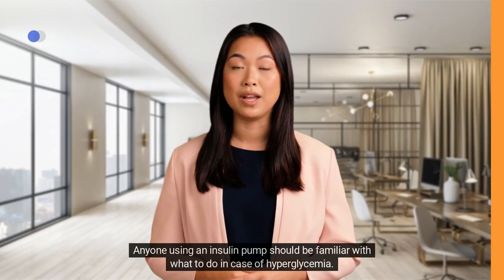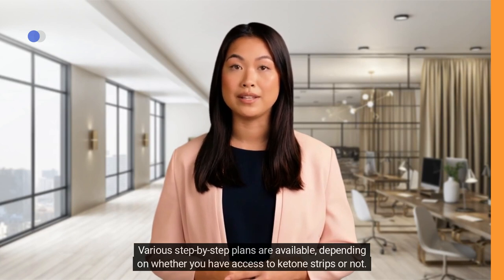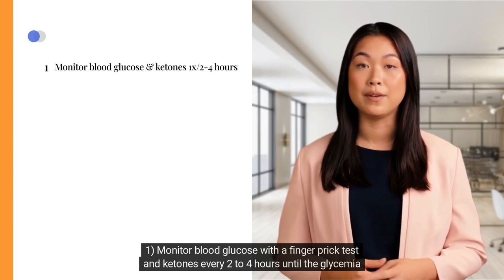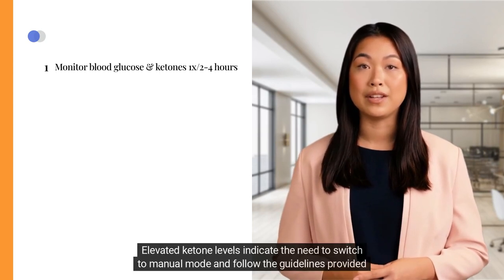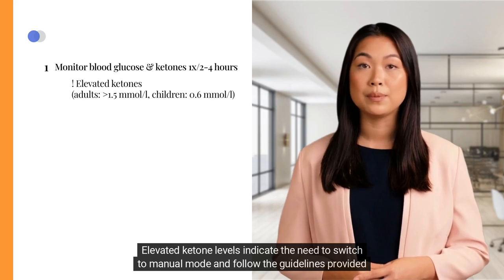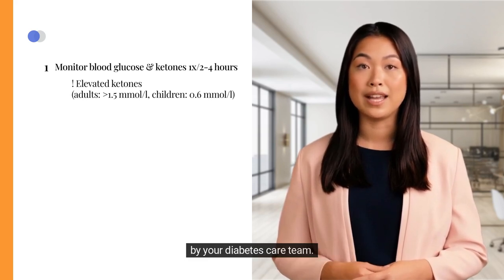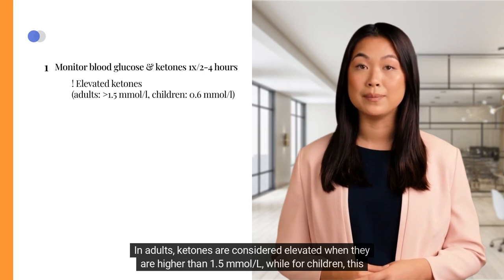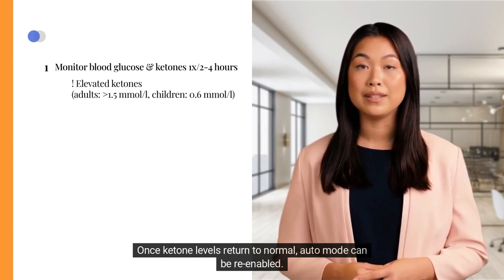Anyone using an insulin pump should be familiar with what to do in case of hyperglycemia. Various step-by-step plans are available, depending on whether you have access to ketone strips or not. Step 1: Monitor blood glucose with a finger prick test and ketones every 2 to 4 hours until glycemia returns to normal. Elevated ketone levels indicate the need to switch to manual mode. In adults, ketones are considered elevated above 1.5 mmol/L; for children, from 0.6 mmol/L. Once ketone levels return to normal, auto mode can be re-enabled.